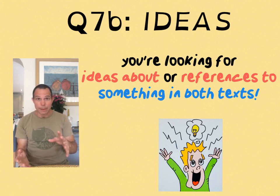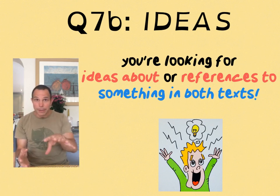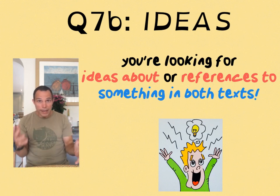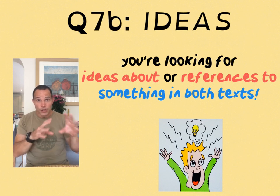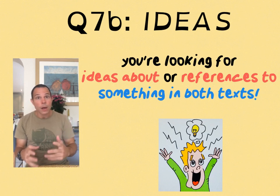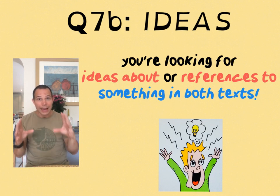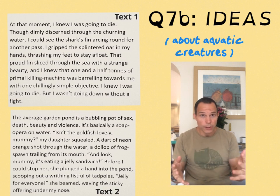'Ideas,' as we shall see, is a reassuringly broad concept. Every year an examiner must come across dozens of acceptable ideas from different students in response to Question 7b. Of course it's different from 7a because you can look for similarities and differences. A lot of people hate this question — and rightly so — but don't panic. The examples of ideas I'm now going to pluck from the two texts will help clarify what to look for and what to analyze under the banner of ideas.